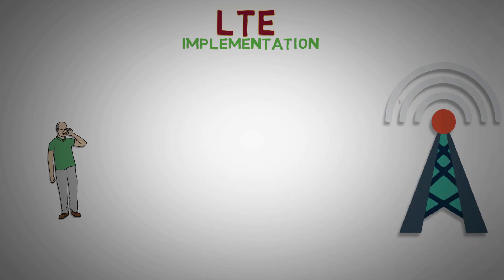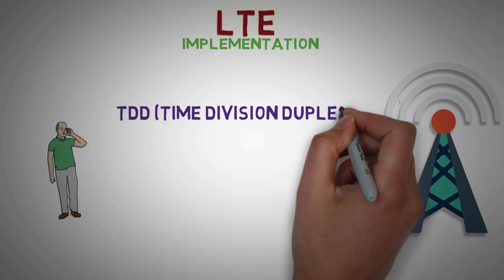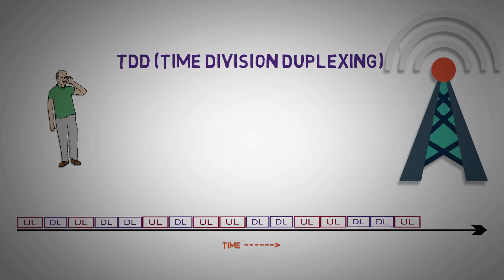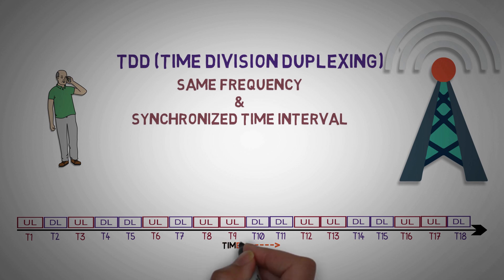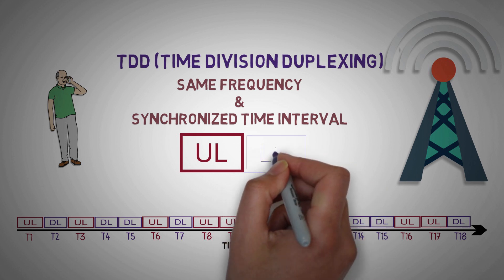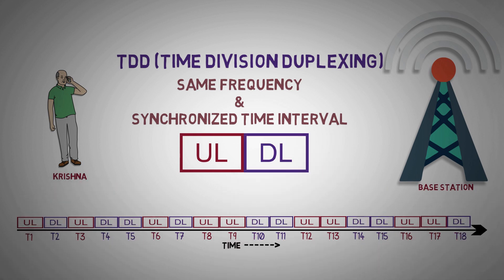Time Division Duplex (TDD) is a technique by which the uplink and downlink transmissions are carried over the same frequency using synchronized time intervals. For example, in a TDD communication path between Krishna and a base station, Krishna can alternatively transmit and receive over time — using time slot 1 to transmit, slot 2 to receive, slot 3 to transmit, and so on — with the base station doing the exact opposite.